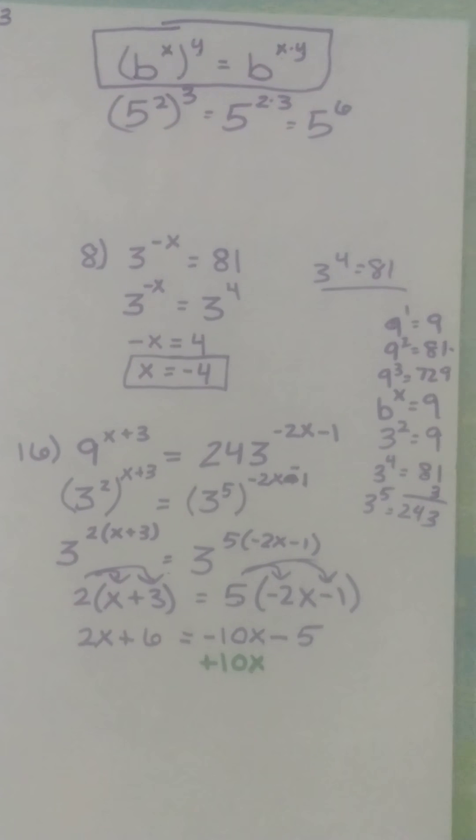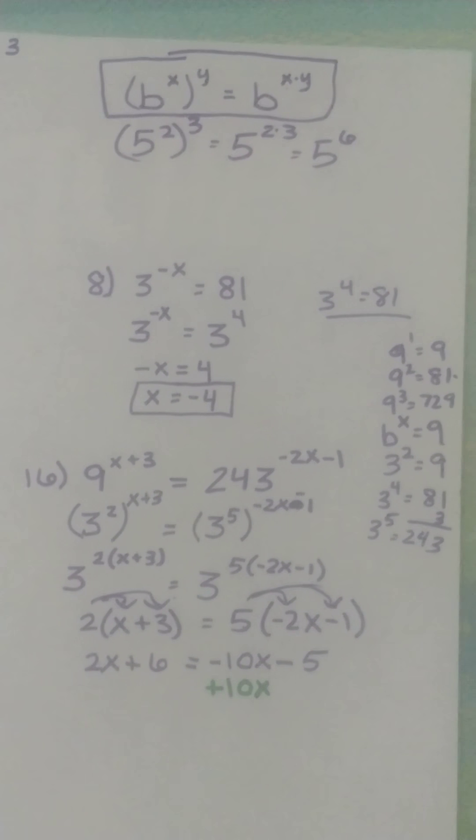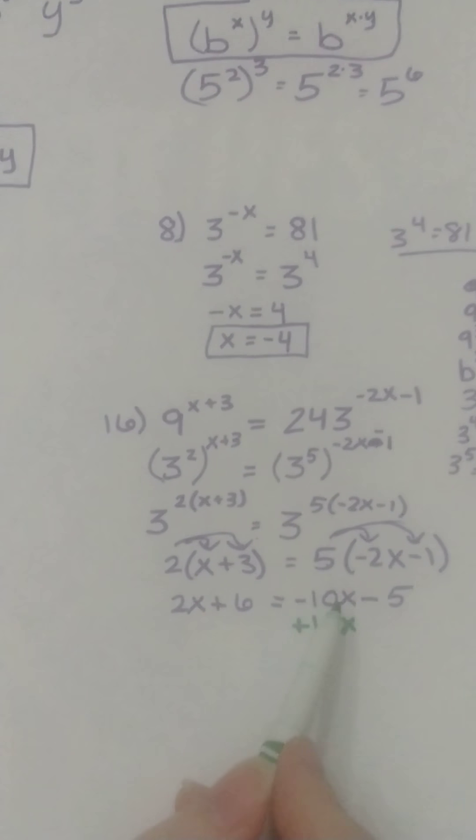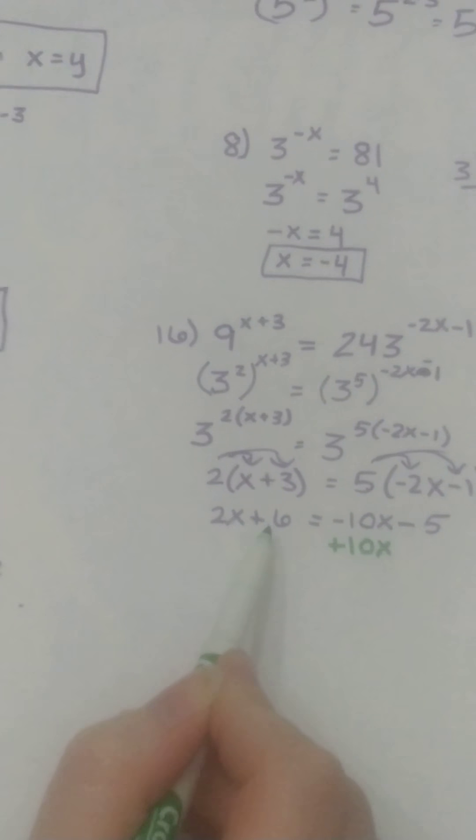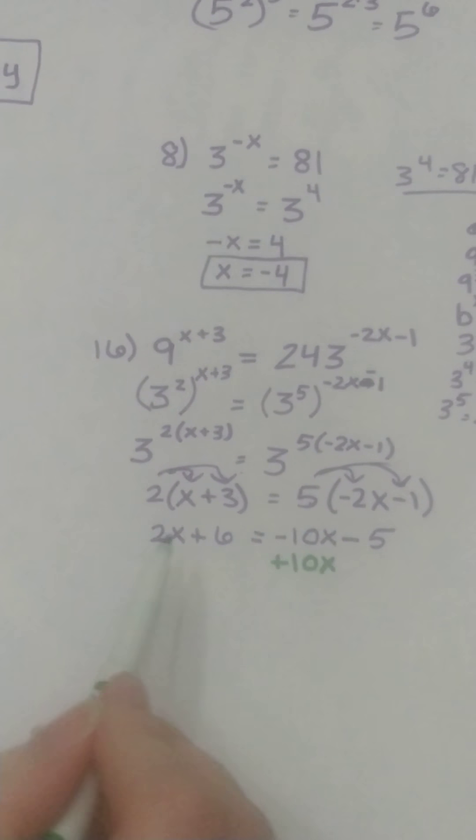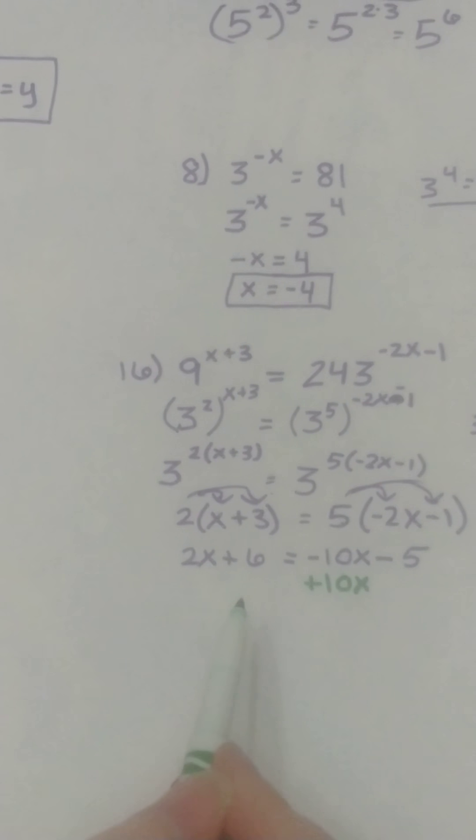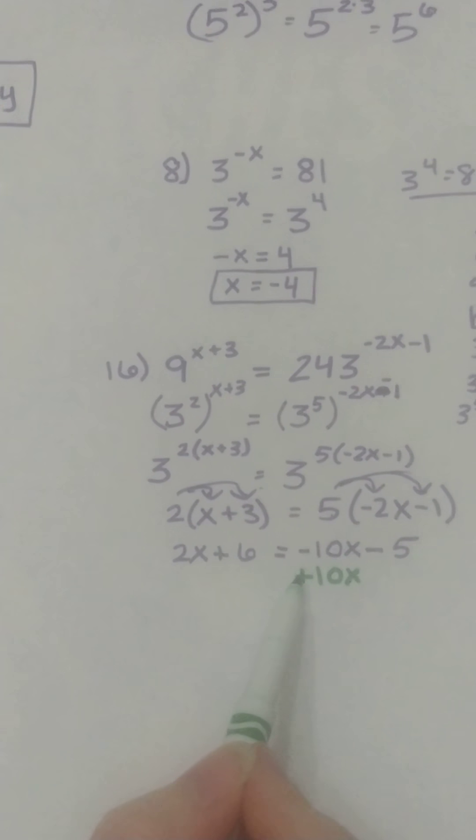So the goal here is we've got x on this side and a number on this side, x on this side and a number on this side. We need to put the x's together and we need to put the numbers together, and I did plus 10x.